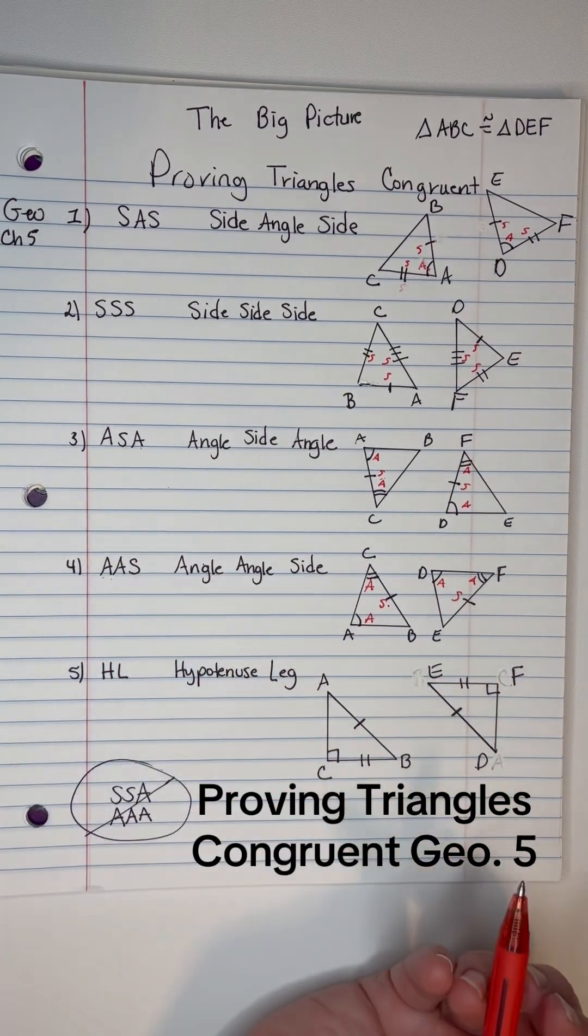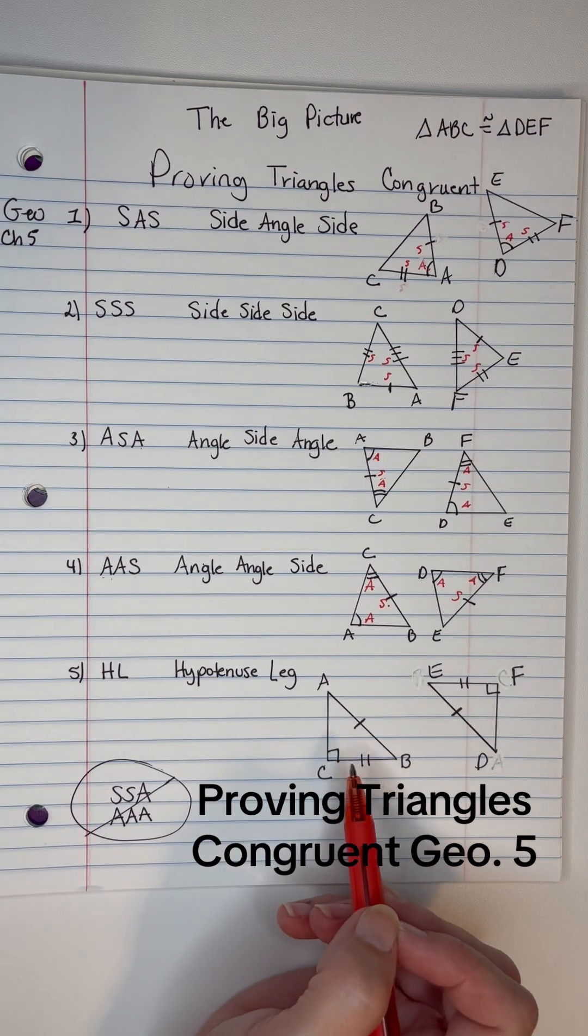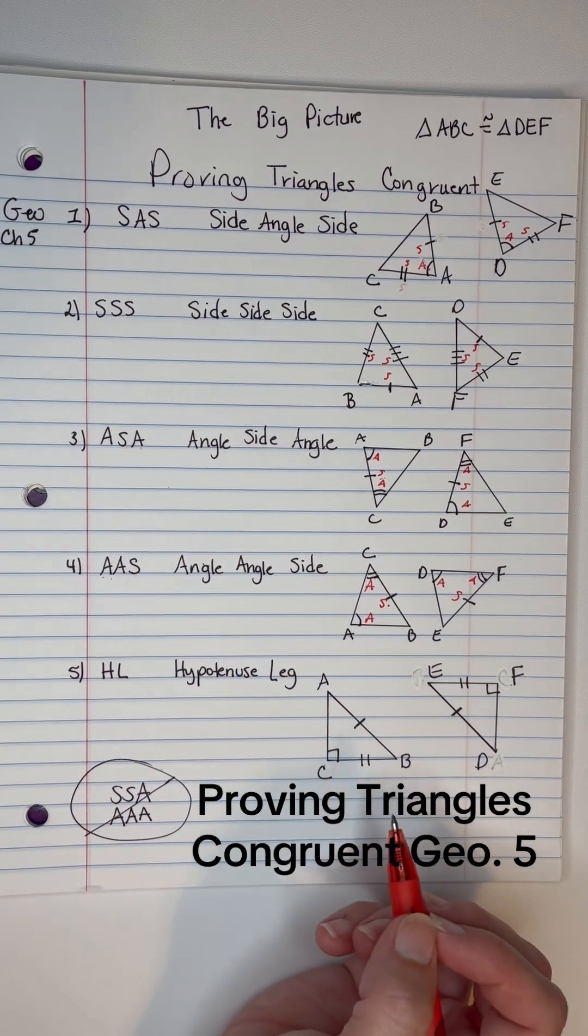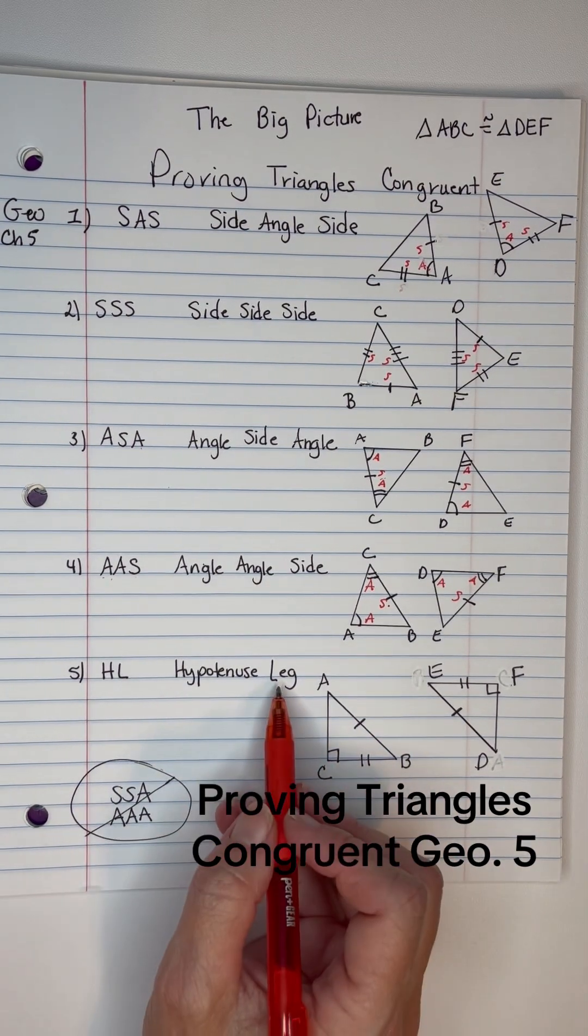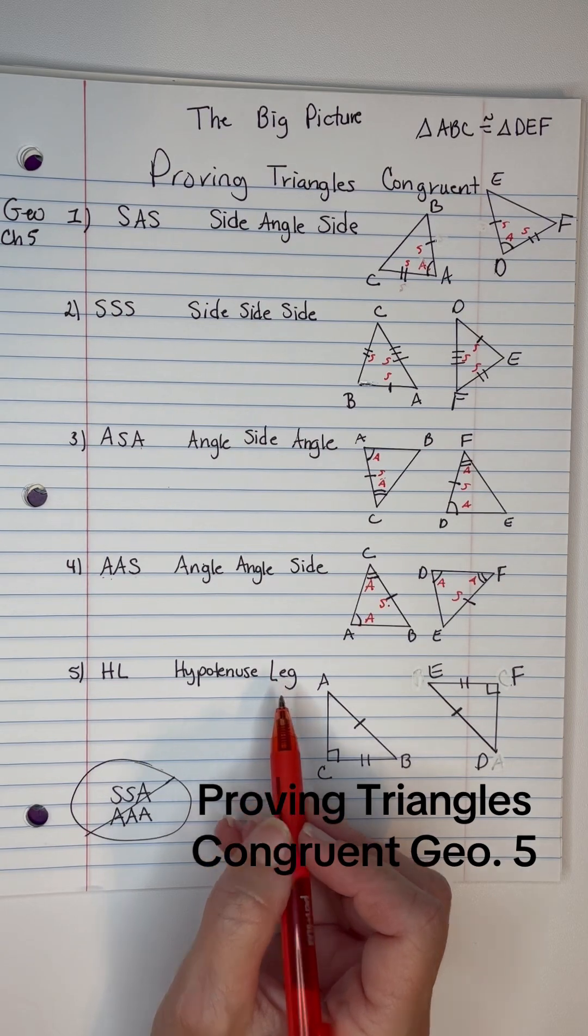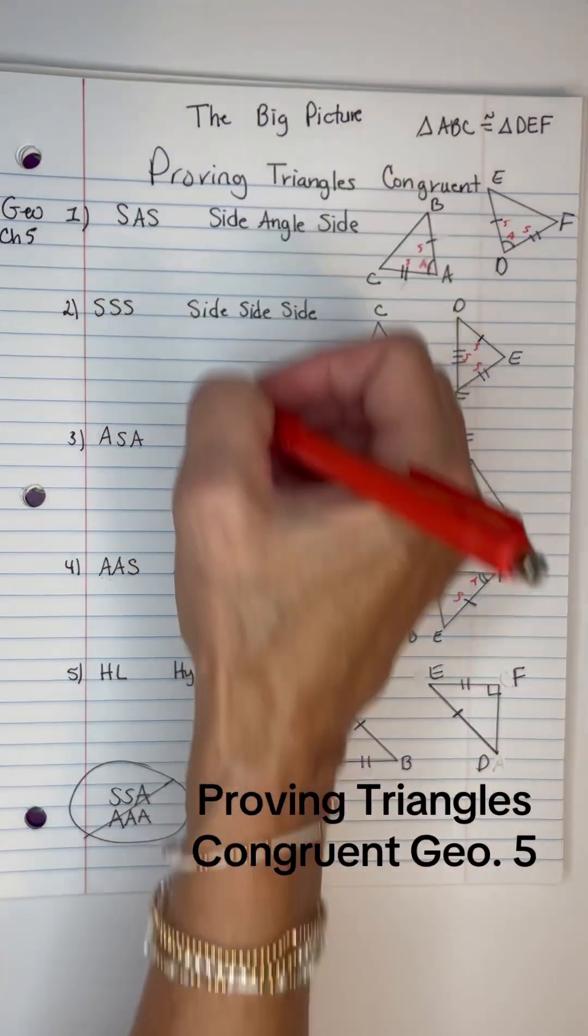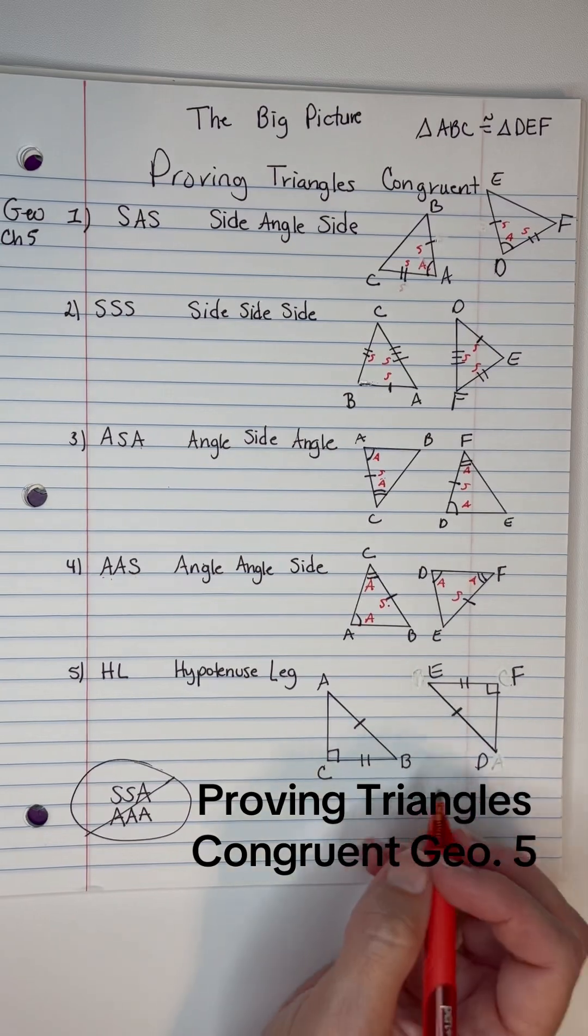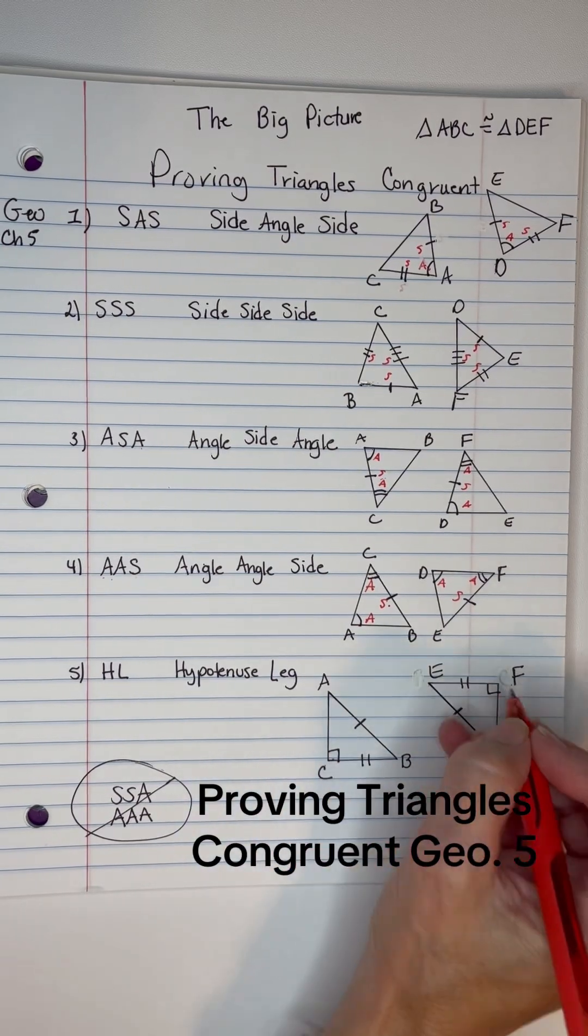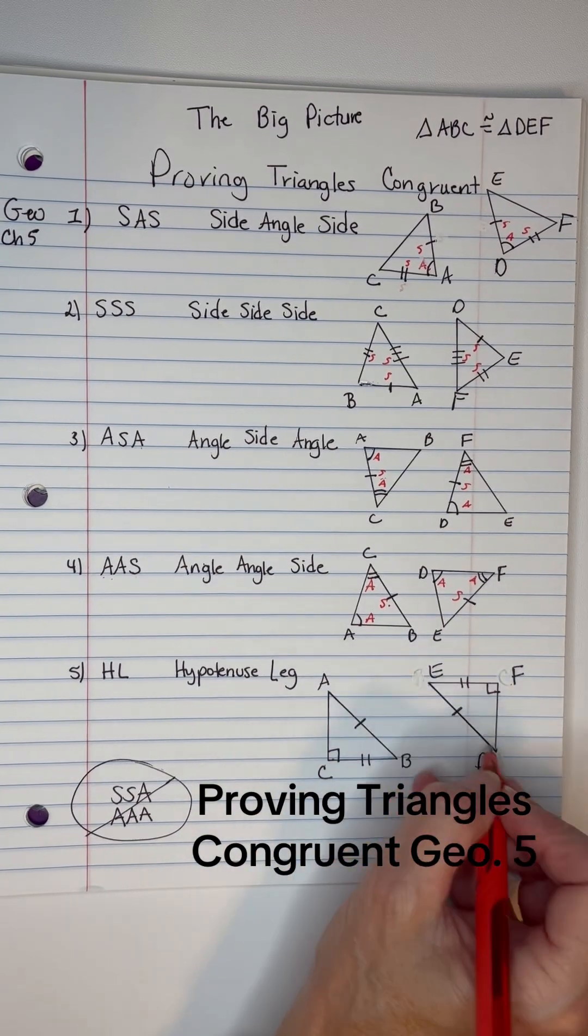And then if you have a right triangle, the only one that Big Ideas addresses is hypotenuse-leg, and they don't even do it in Chapter 5. I think it's a different chapter, but when I teach these, I go ahead and teach this as well. So, if you've got a right triangle, and you look and you find the hypotenuse,